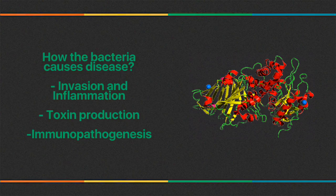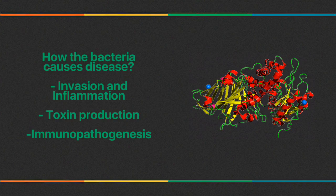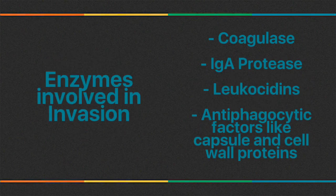Invasion and inflammation involves adherence to the mucous membrane and causing inflammation. Toxin production — endotoxins and exotoxins — is responsible for disease symptoms. Immunopathogenesis means it is usually not the bacteria itself but the immune response to the pathogen that causes the symptoms.